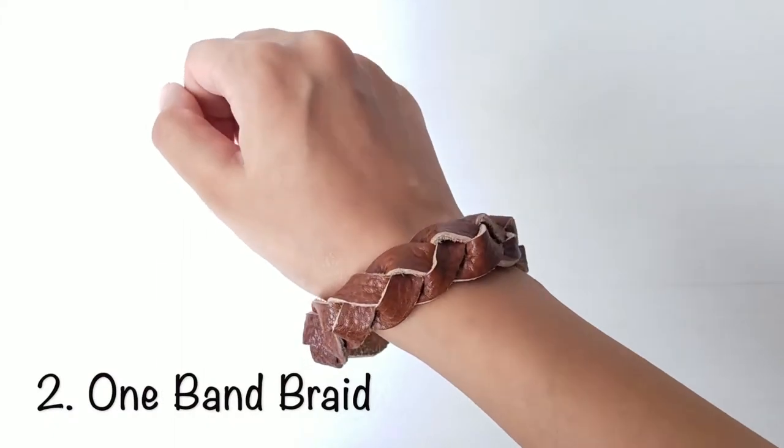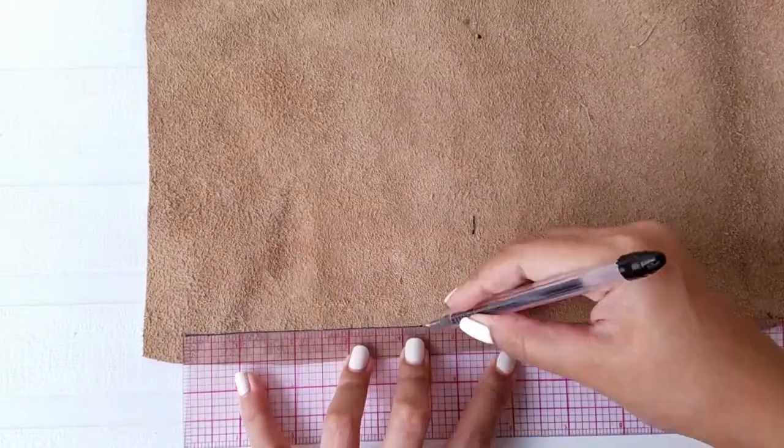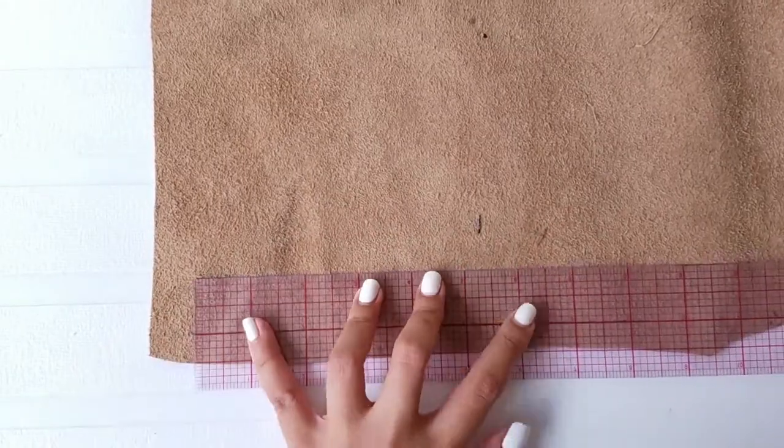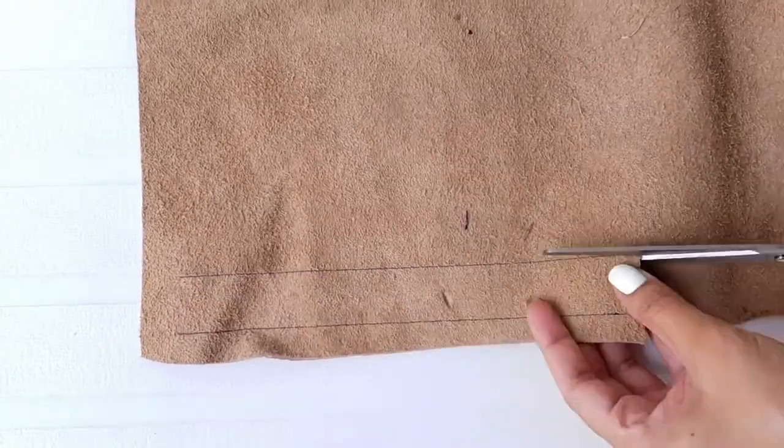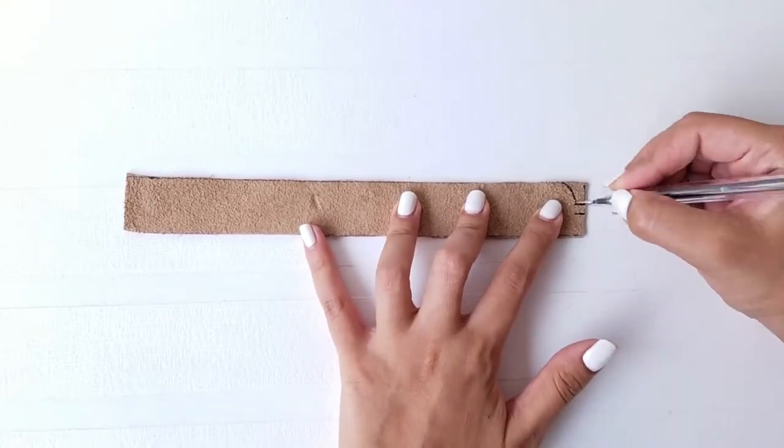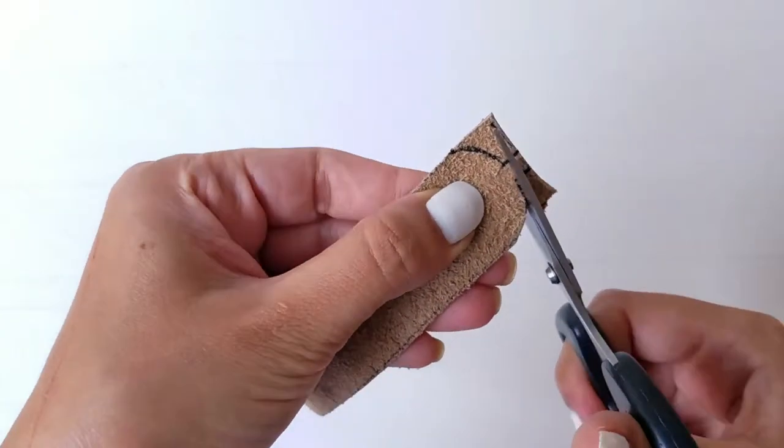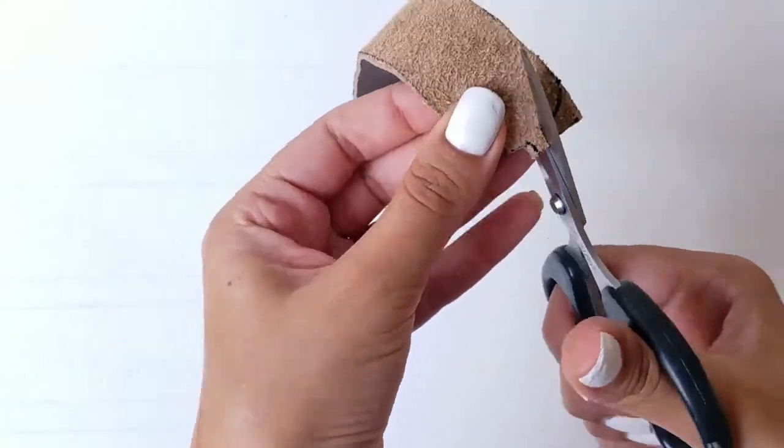To make this one band leather bracelet, take a piece of leather and cut it in one and a half by seven inches. Cut both the ends of the leather band as seen here.